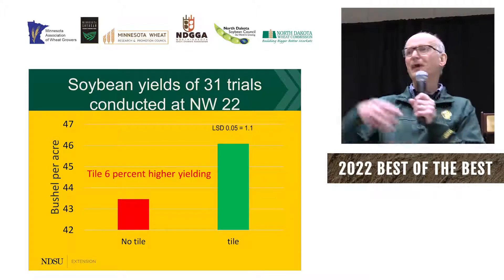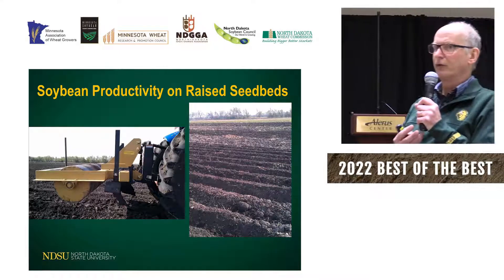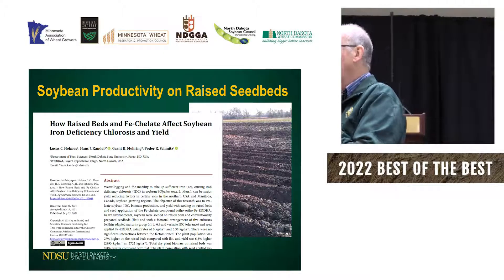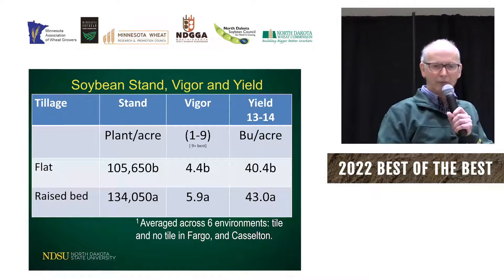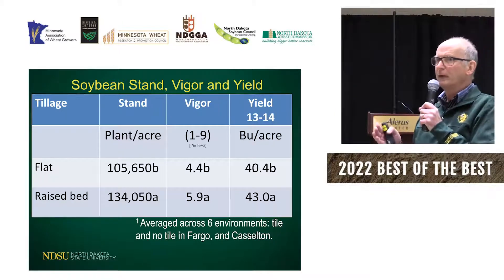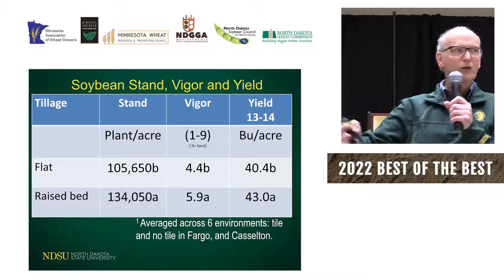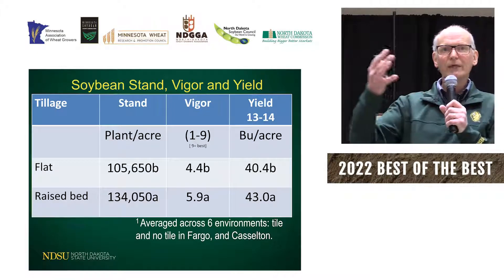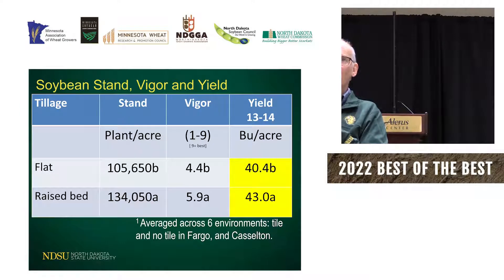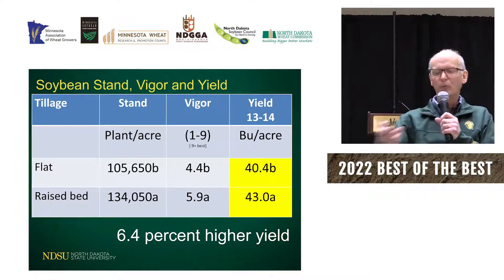The main thing: tile does work. What yield increase do you get? It depends on the year, the crop, the experiment. Now jumping to another piece of research — raised beds. Here we have some raised beds, and a paper was published recently if you want more information. Comparing flatland to raised beds across six experiments, plants per acre were lower on flatland due to excess moisture. The raised bed brought plants out of the saturated zone and had about 6.4% higher yield compared to flatland.